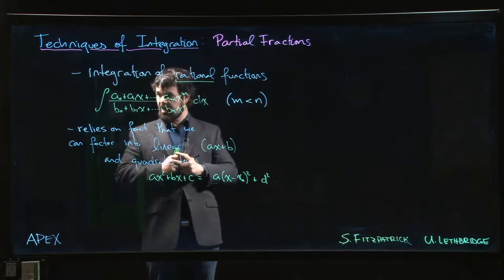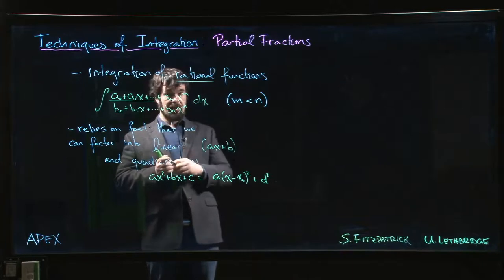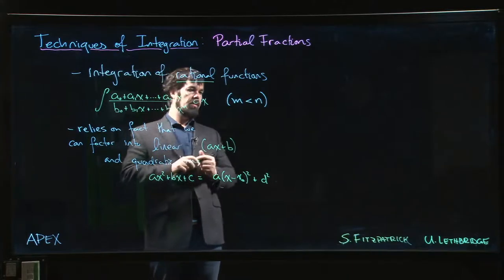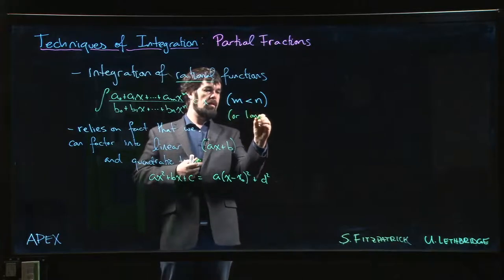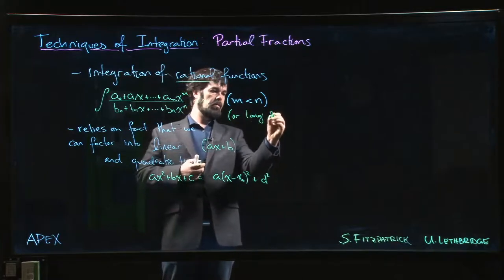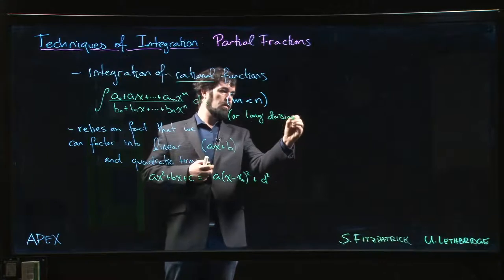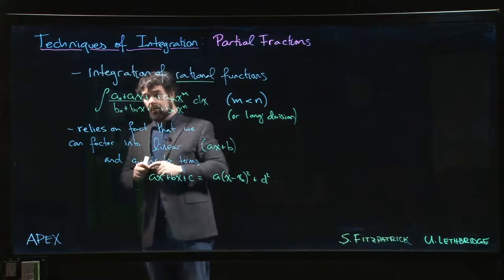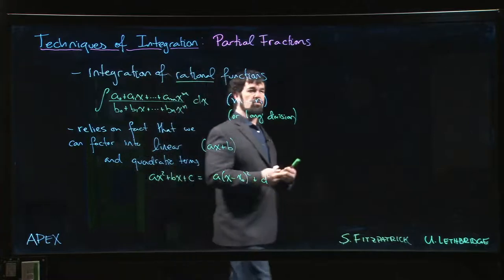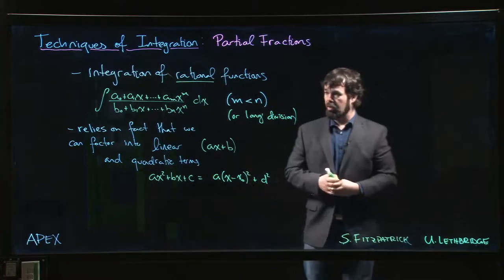One of the assumptions that we'll make here is that m is less than n, so the degree of the numerator is smaller than that of the denominator. If it's not, the first thing you'd have to do is do some long division. So if the degree of the numerator is bigger than or equal to the degree of the denominator, the very first thing you should do to simplify algebraically is do long division.